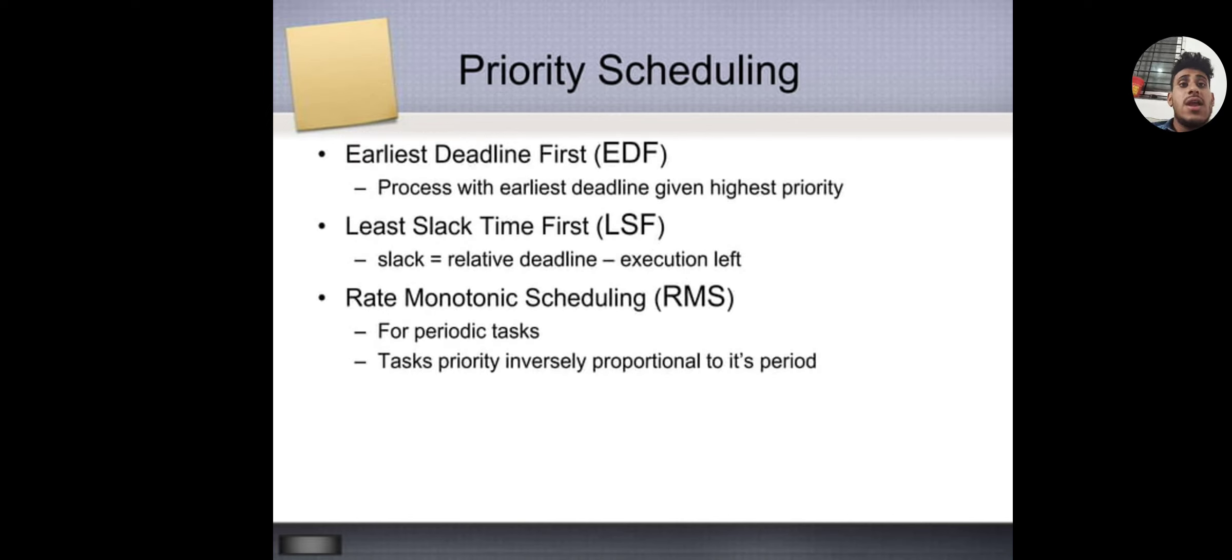Priority scheduling: Earliest Deadline First (EDF) - Process with earliest deadline given highest priority. Least Slack Time First (LSF) - Slack equals relative deadline minus execution. Rate Monotonic Scheduling (RMS) - For periodic tasks, task priority inversely proportional to its period.